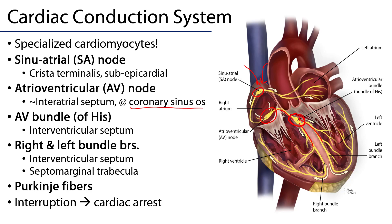The lion's share of the right bundle branch goes through the septomarginal trabecula, and the remainder is conducted down through the septum and around to the wall of the right ventricle. The left bundle branch follows a more direct path around the left ventricular wall, and these branch into Purkinje fibers which serve the myocardium of the ventricles.